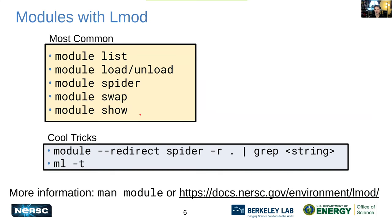Largely, the module system works similarly to what you're used to on Cori. `module list` is the same as before. `module load` and `unload` are still how you load and unload packages. The big difference is `module spider`. This is going to be a commonly used command because it's how you find software to load into your environment. Previously on Cori you would have used `module avail`, and `module avail` will still work on Perlmutter — it just won't show you everything, as I'll demonstrate in the next slides.